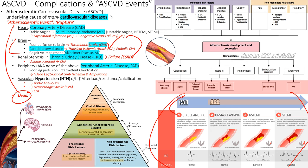As nurses, when reporting chest pain you need to describe it precisely: pressure-like, radiating to the left arm, non-pleuritic, non-positional — that will get the doctor's attention. Vague 'chest pain' gets a different response. Once CAD is present, the patient can progress to ACS and then MI.